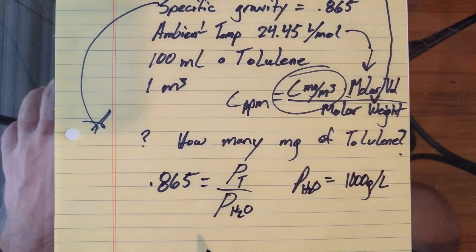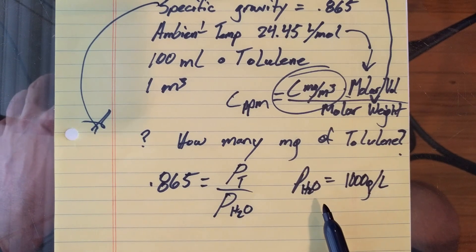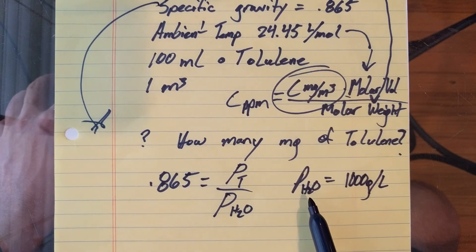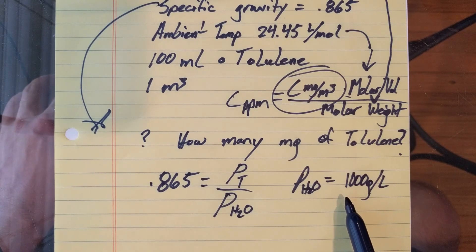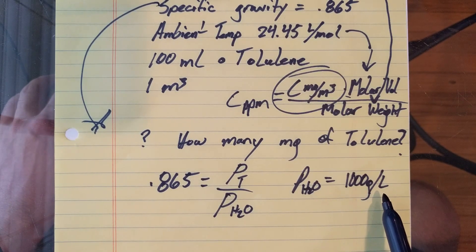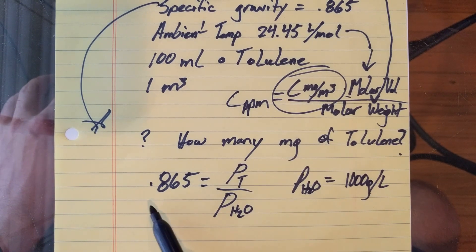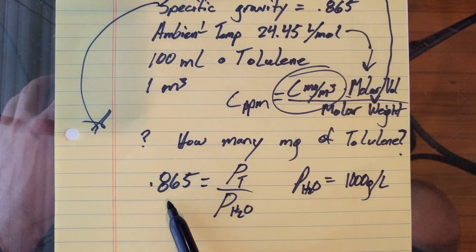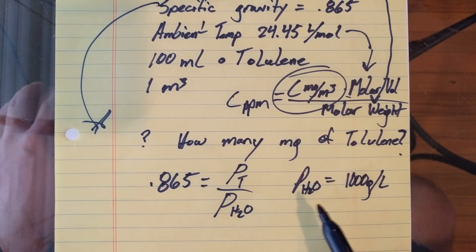What's unique about this is that if you wanted the density in other units, you would just use different units for the density of H2O. So if you wanted it in pounds per cubic foot, if you had the density for water, you would just multiply by this number, and that would give you the density of toluene in pounds per cubic foot.